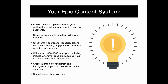Your epic content system: first, decide on your topic and create an outline that breaks down your content. Then come up with a killer title that will capture attention immediately. Uncover three or four sources for research. Spend some time reading blog posts on authority websites. Write a 1,500-word post including images whenever possible. Break up your content into shorter paragraphs. Create a graphic for Pinterest and Instagram that you can use to link back to your website. Then share it everywhere you can.